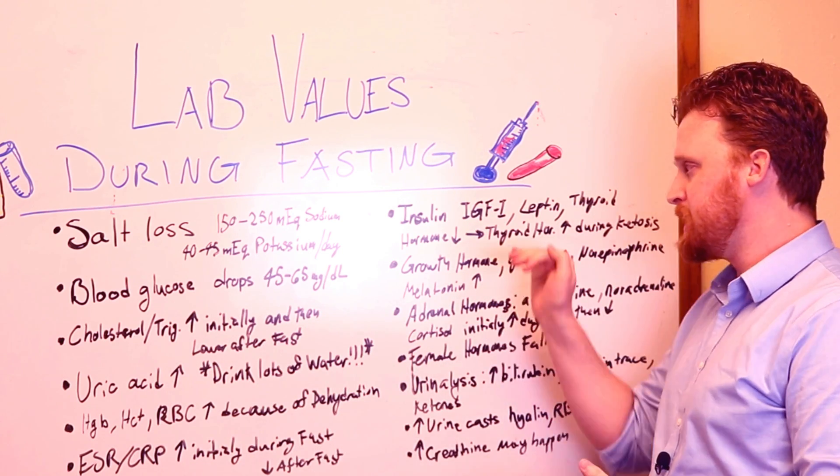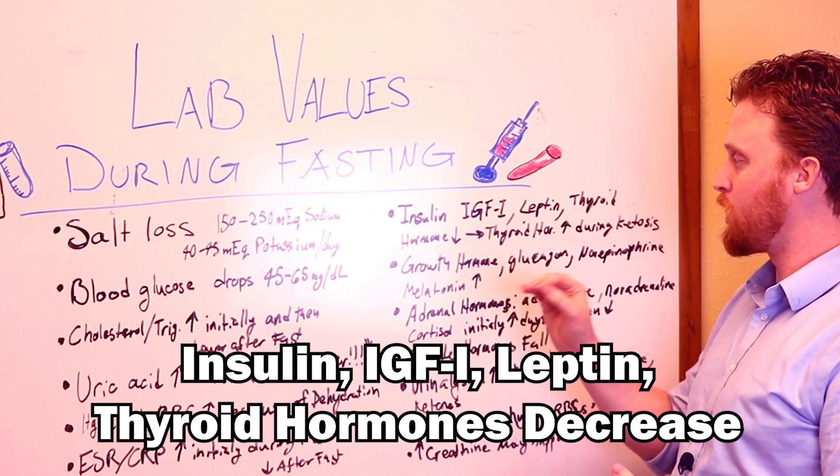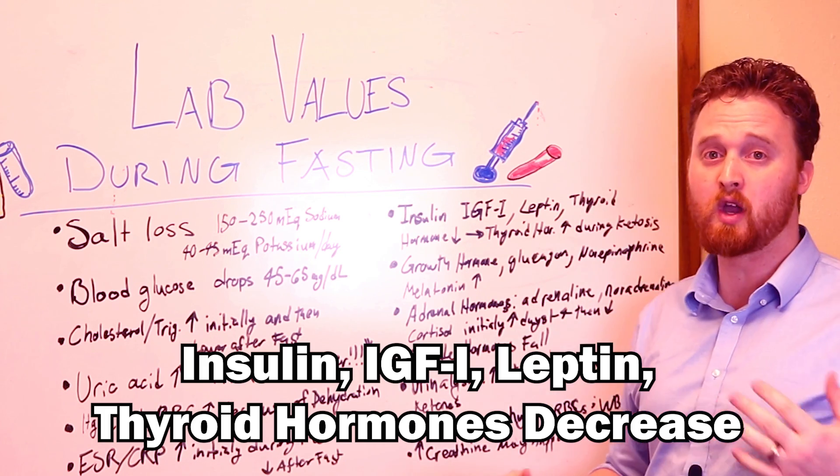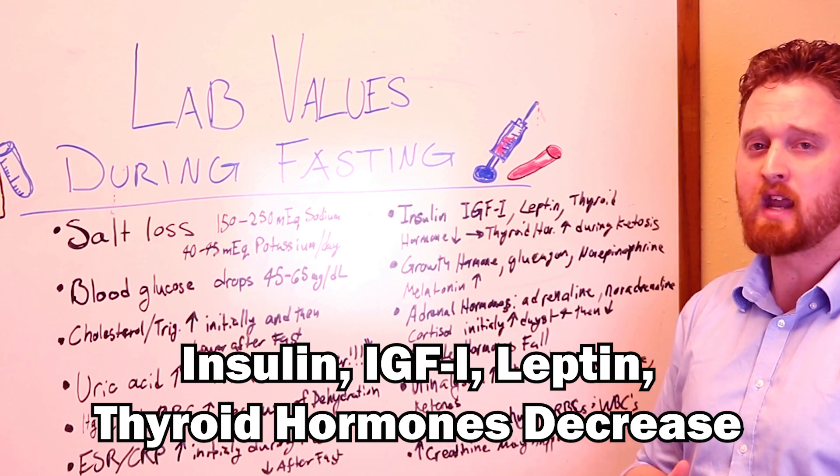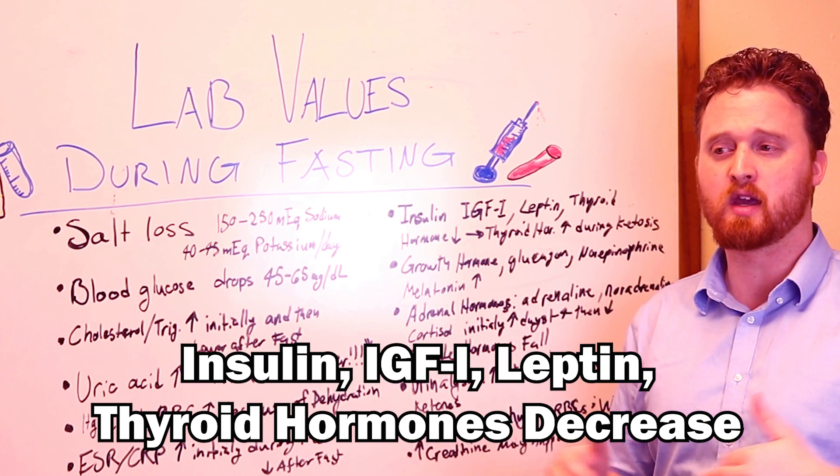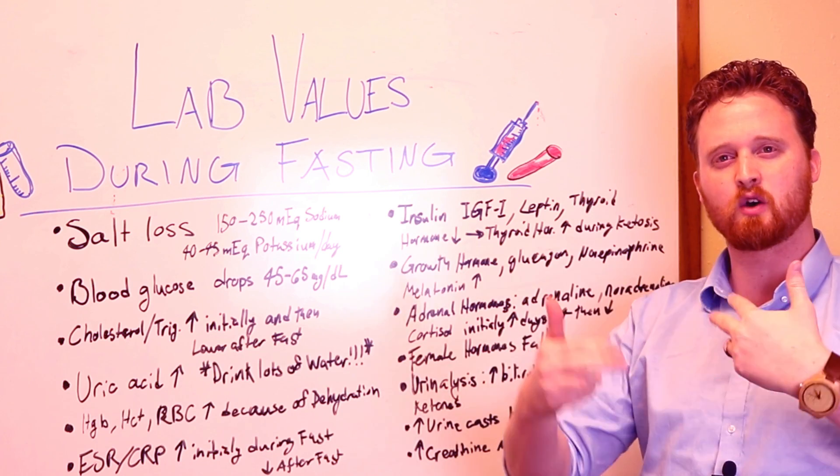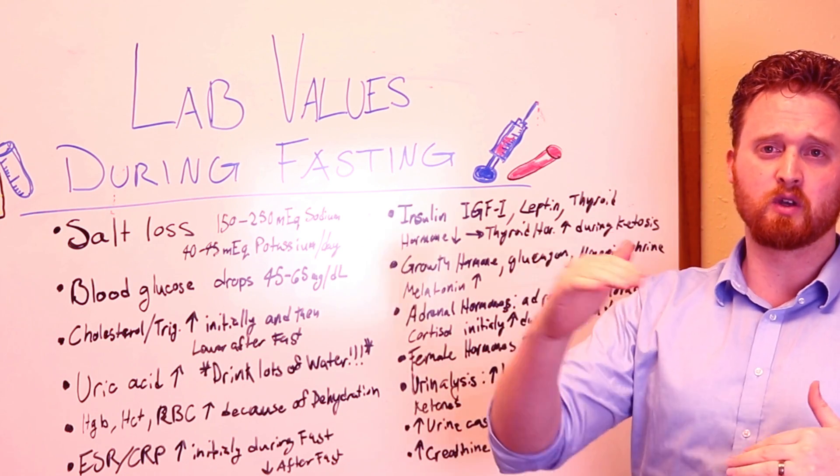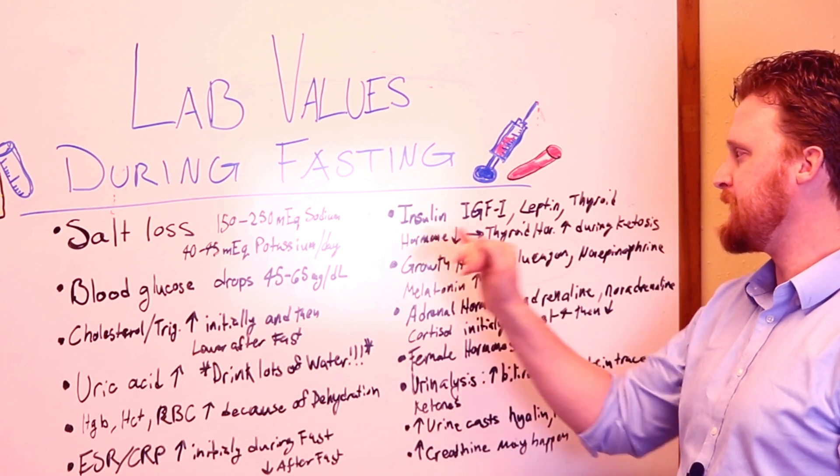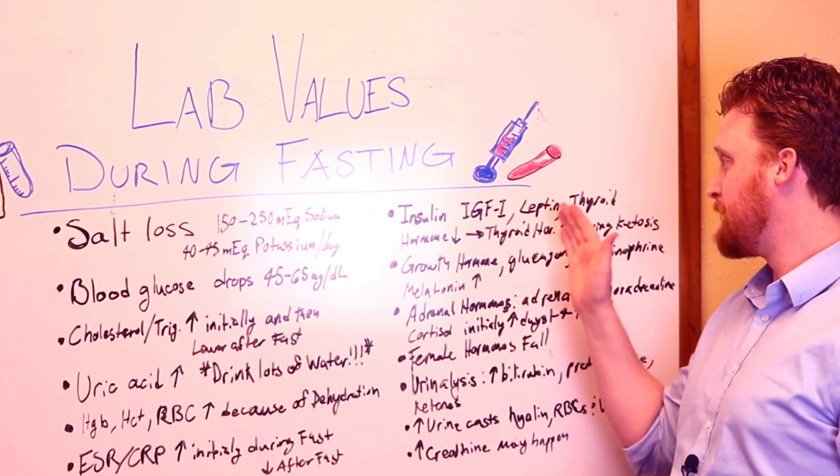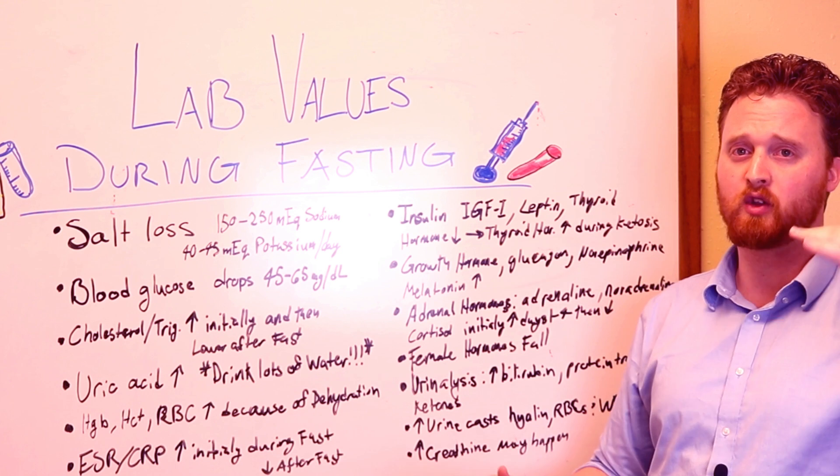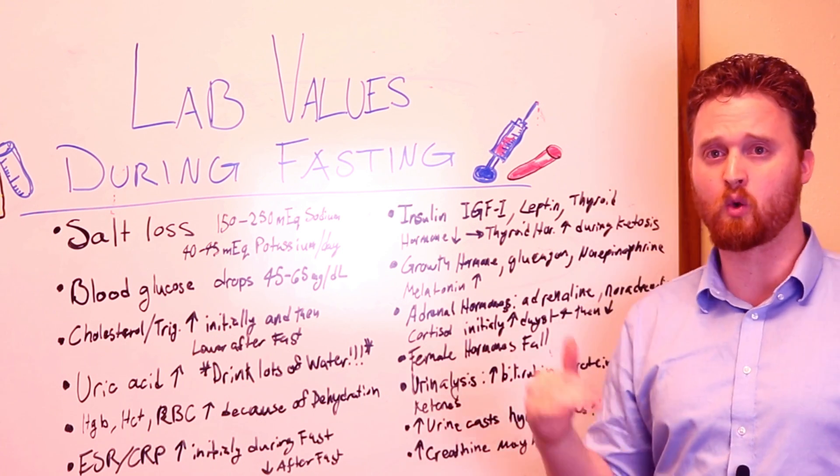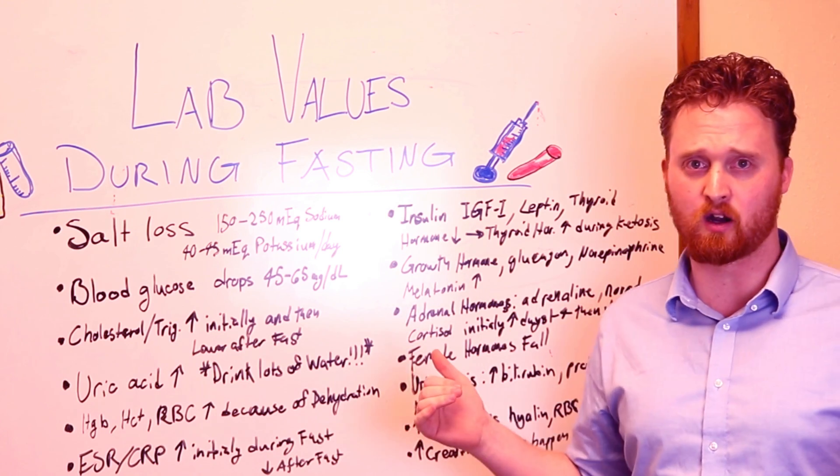Insulin and insulin growth factors, leptin and thyroid hormones will decrease while you are fasting. With thyroid hormone, it will initially decrease, but once you reach ketosis, thyroid levels will go back up to a normal pace level where it needs to be at. But insulin and leptin levels for sure will decrease as will insulin growth-like factors while you are fasting. We've talked about that in our other videos as well.